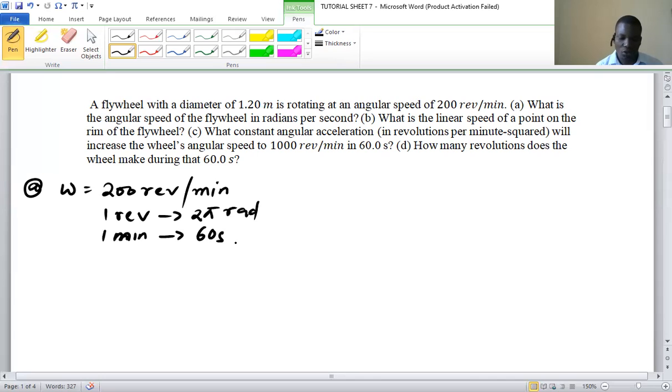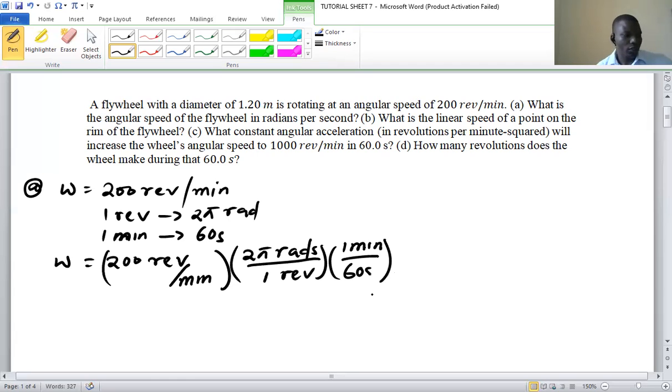With this conversion factor we can convert 200 rev per minute into radians per second. So we have 200 rev per minute, multiplying by the conversion factor 2π rad per 1 rev, and then we also multiply by 1 minute per 60 seconds.